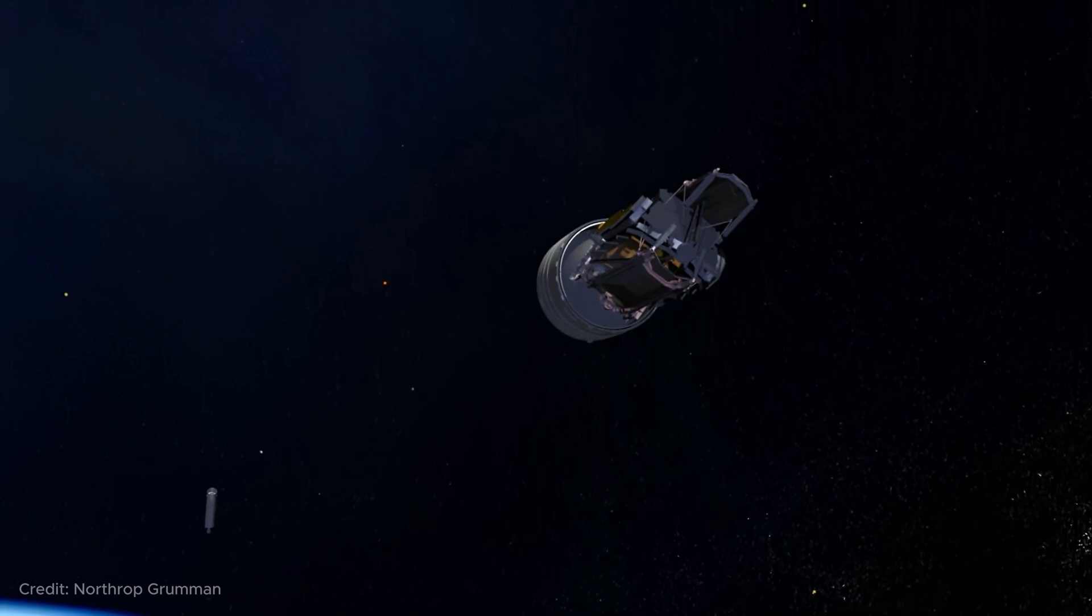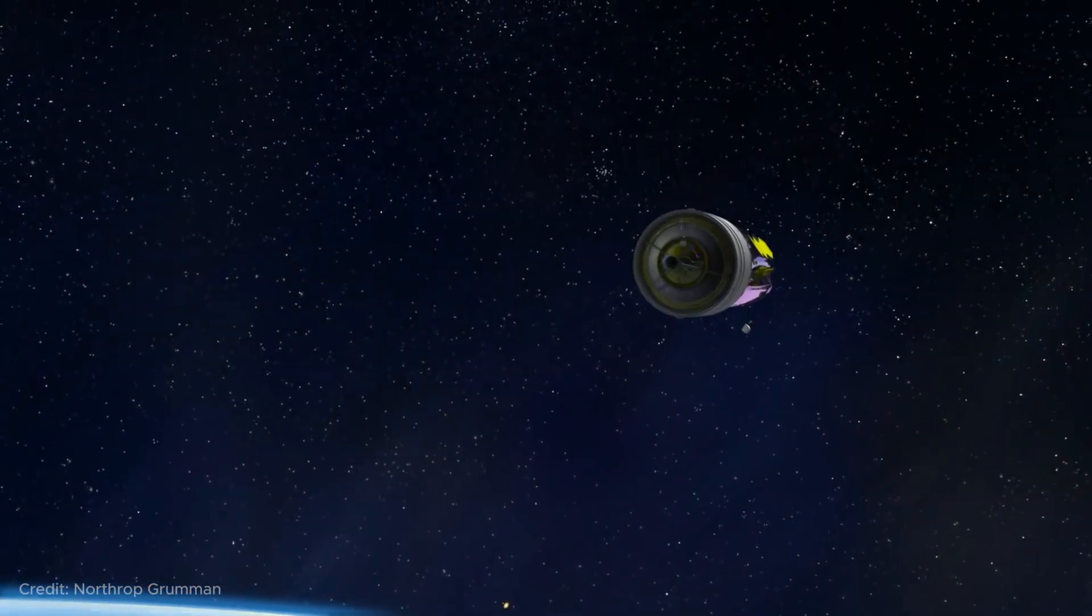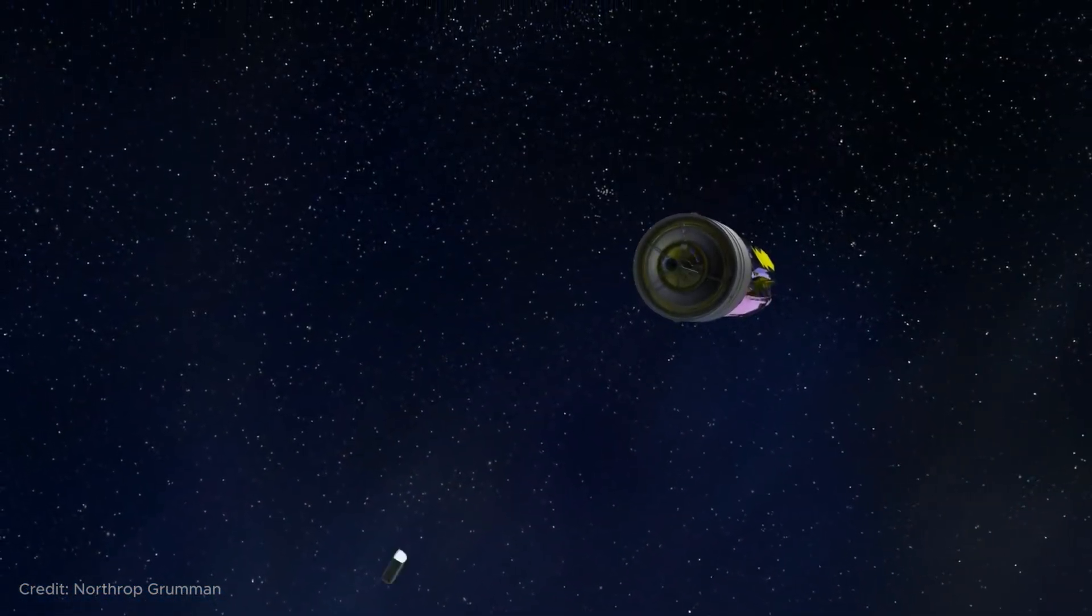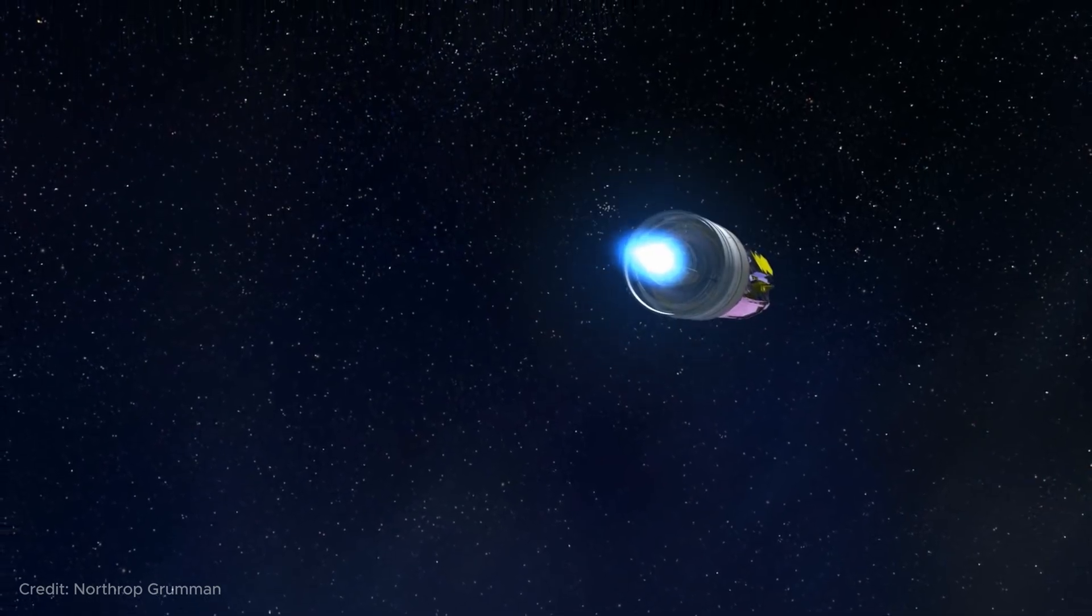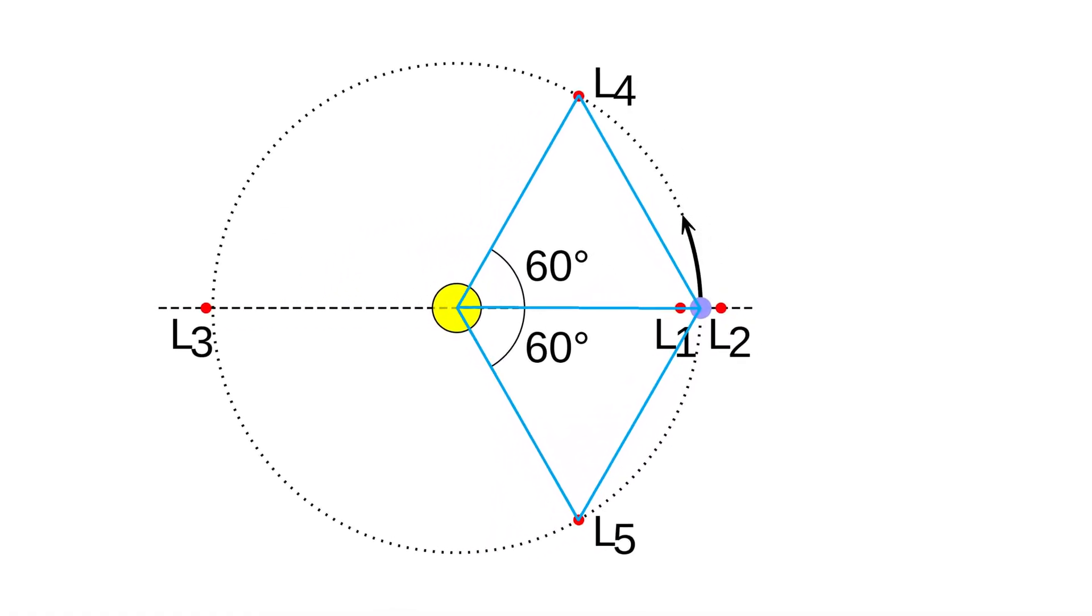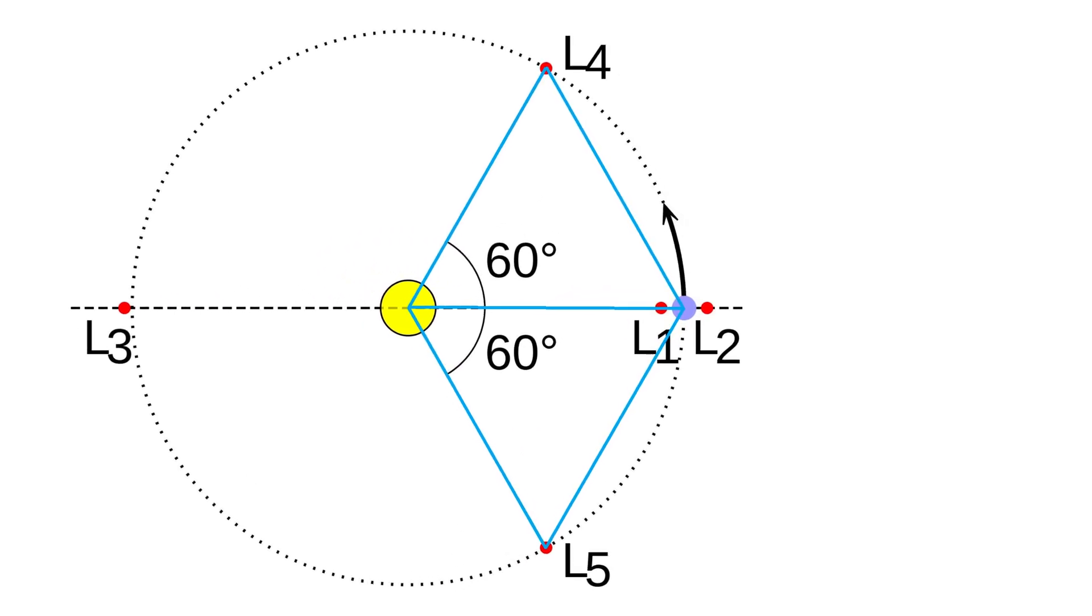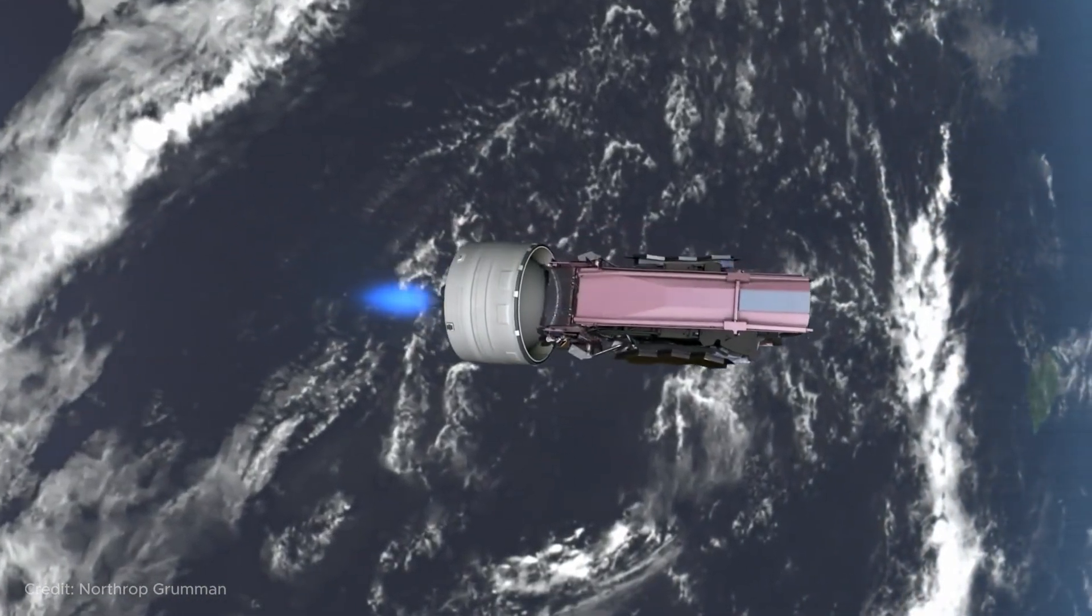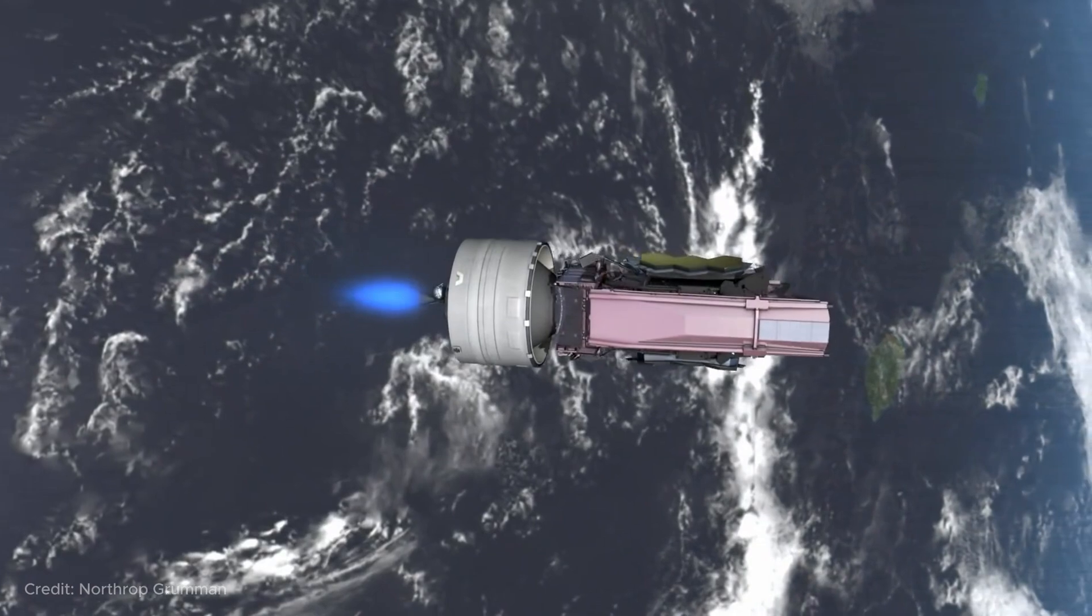Imagine you want to launch a space observatory that studies the Sun. The telescope lenses should look at the Sun, and the radio antennas of this space station, at the Earth. Here is the advantage of one of the Lagrange points, L1, located between the Sun and Earth. The telescope can always be directed towards the Sun, and the antenna towards the Earth, and you won't need to change this configuration.